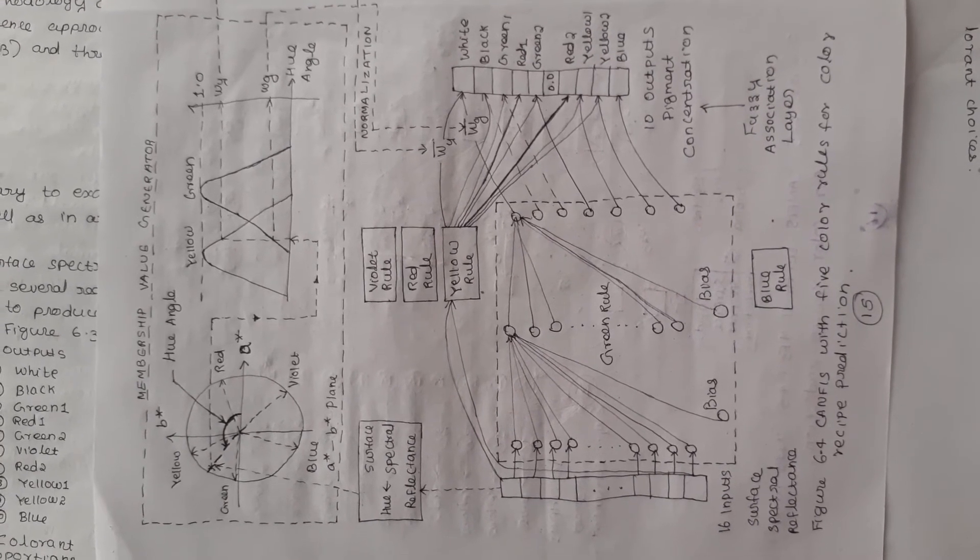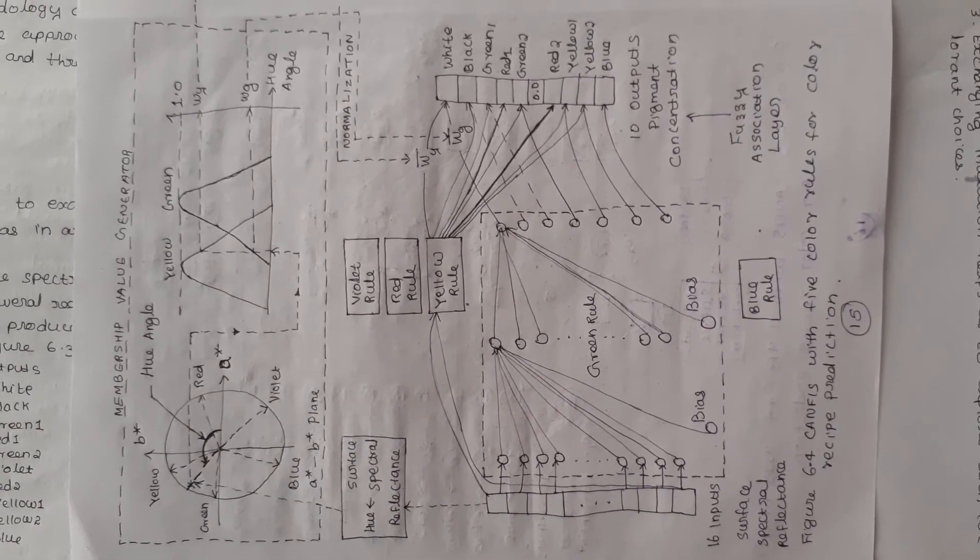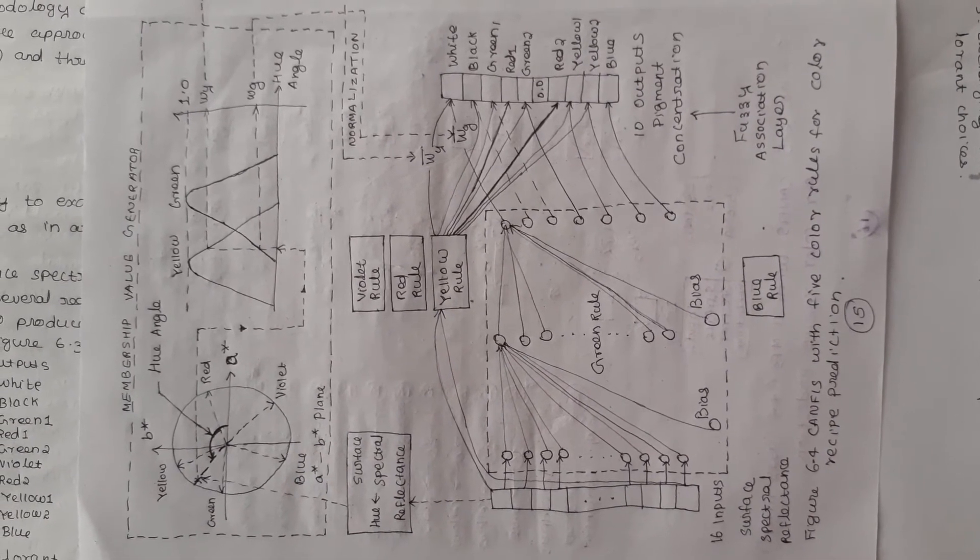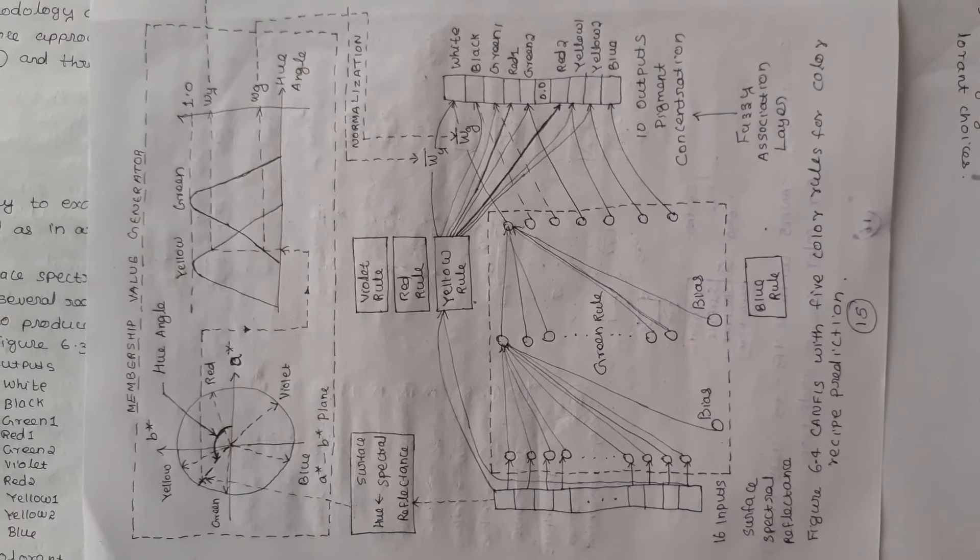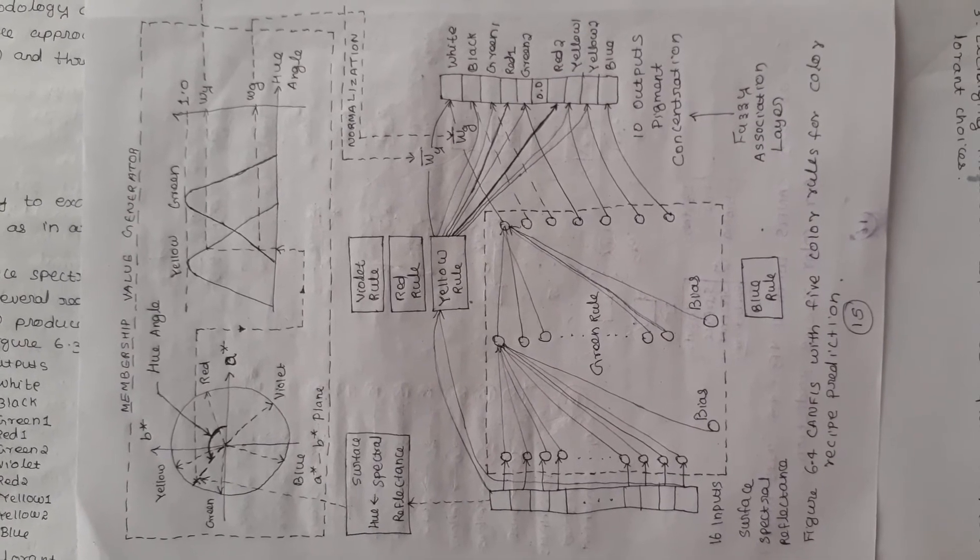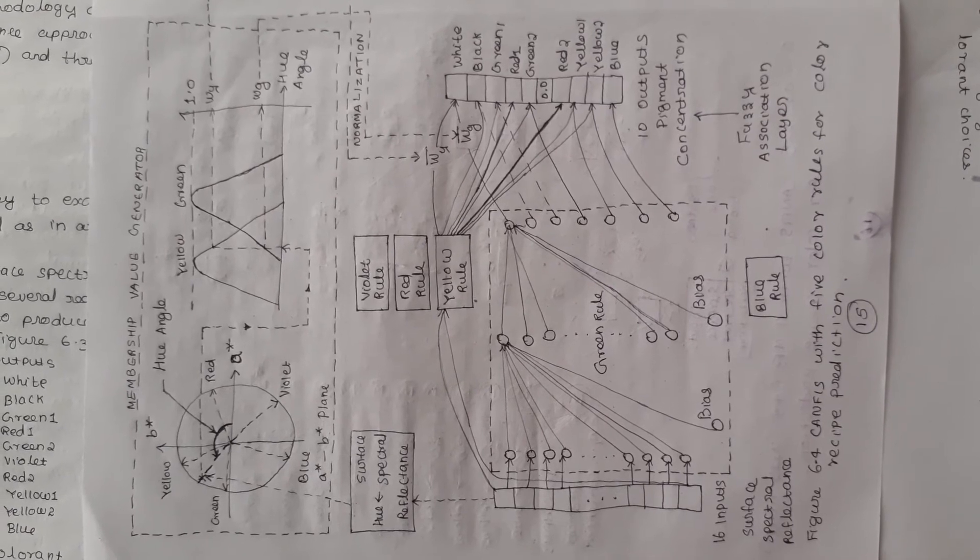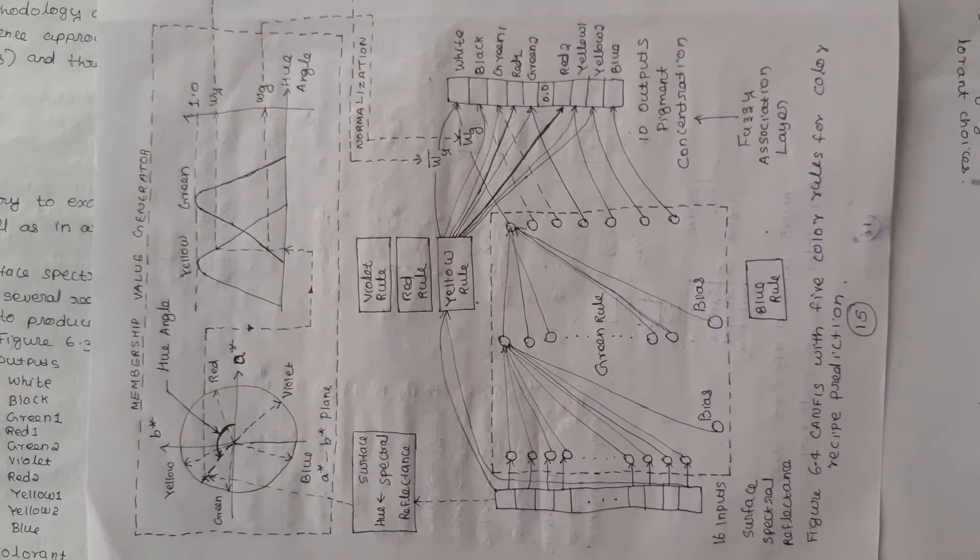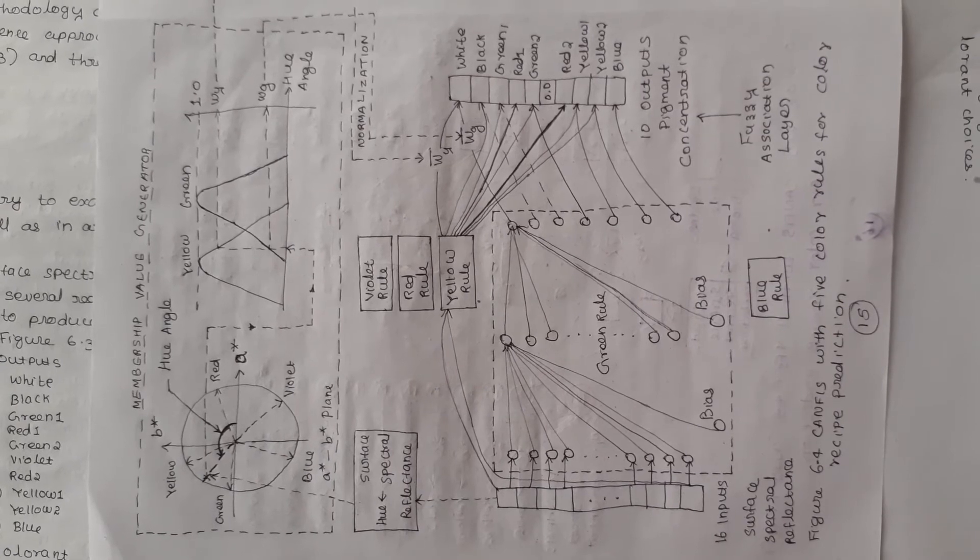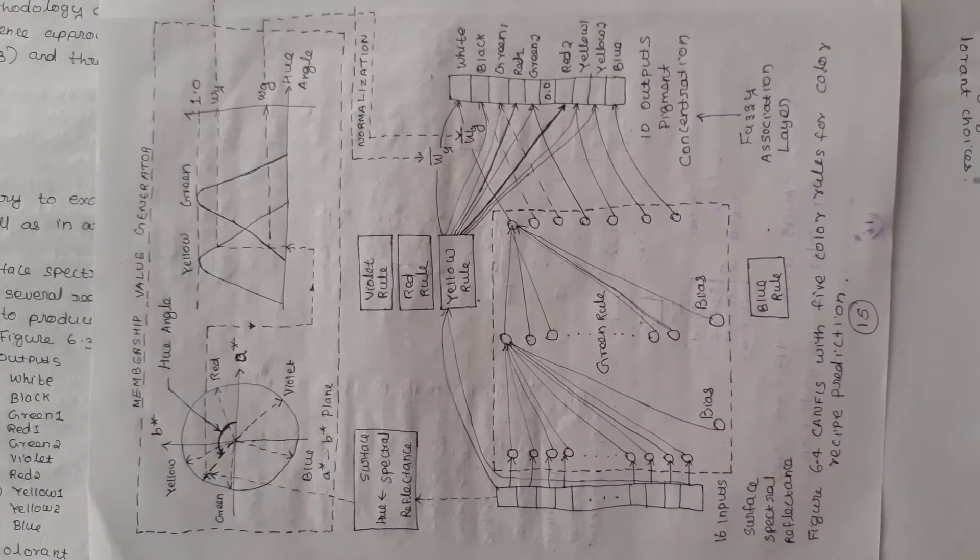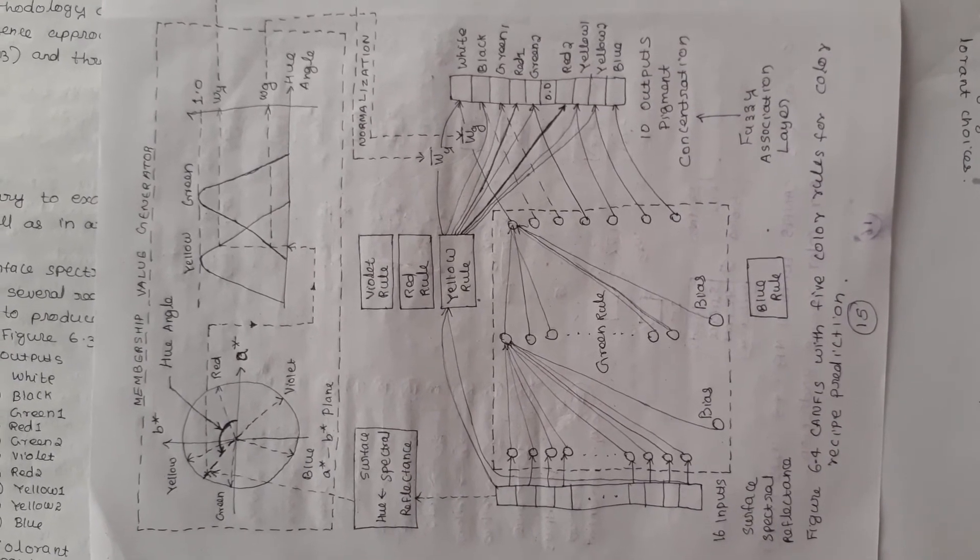For instance, yellow rule: if the target color is yellow, then use a yellow rule. Each color membership function specifies the degree of membership of a color region and assigns the degree value to each color rule, i.e., rules consequent, as the firing strength.